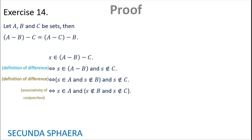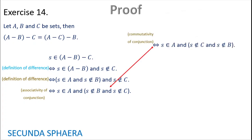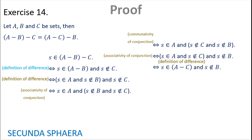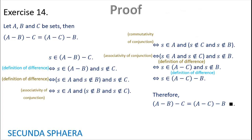Now commuting terms in the second conjunction by commutativity of conjunction gives S is in A and S is not in C and S is not in B. Applying associativity again and using the definition of difference, S is in A and not in C, and again the definition of difference gives S is in A without C without B. This gives an argument connected by equivalences where S was in one set and is in another, so those sets must be equal by definition of equality of sets. Exercise 14 is complete.